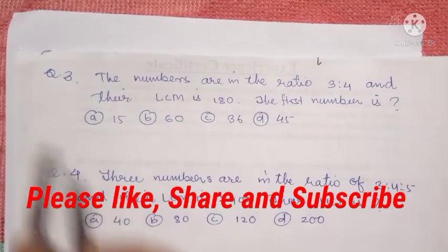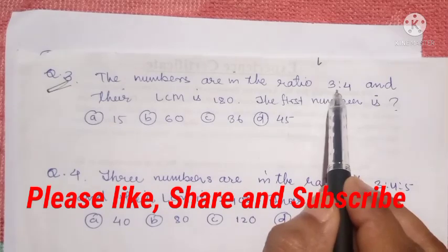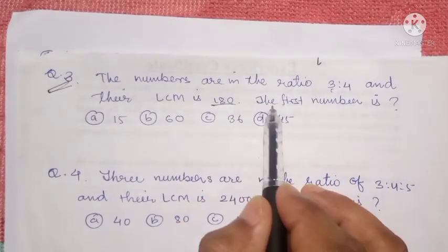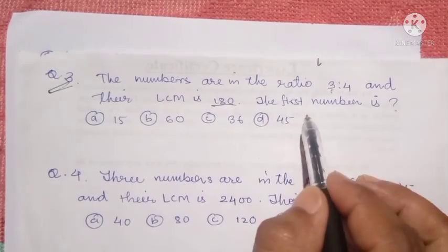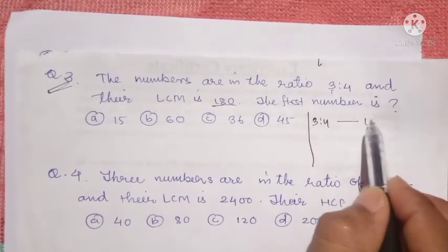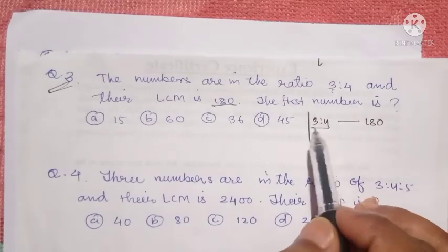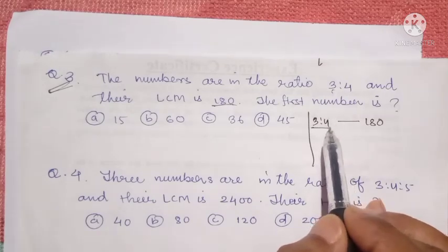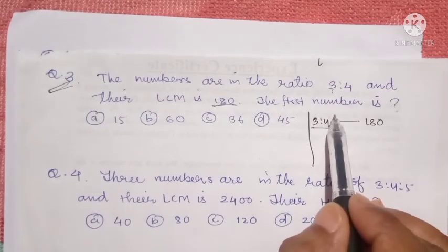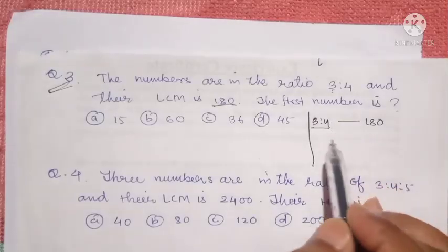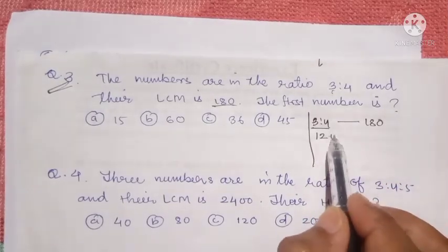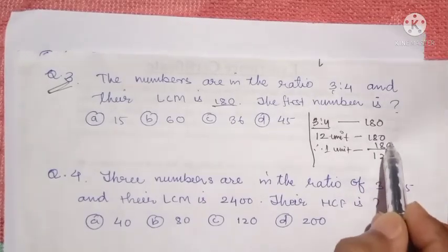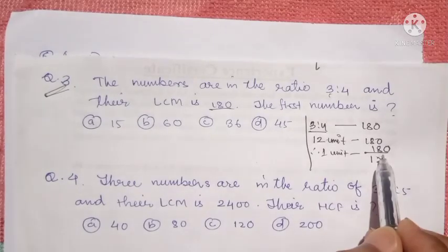The numbers are in the ratio 3 is to 4 and their LCM is 180. The first number — the numbers are in ratio 3 is to 4 and LCM is 180. They are trying to get the LCM. LCM is 4 and 4 is to 3 and it is 7 minus 4. This will be 12 and 12. This will be 12 units and 12 units.